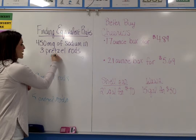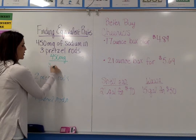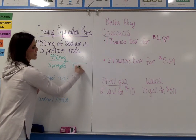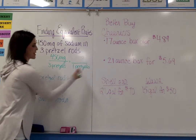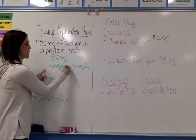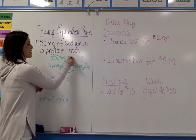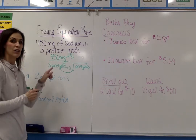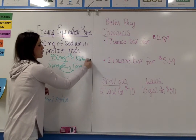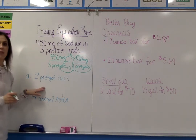We set up our unit rate as a ratio: 450 milligrams over three pretzels, because we need to find how many milligrams are in one pretzel. Make sure you're putting labels on your rates. Going from three to one means we're dividing by three. To keep them equivalent, if we divide the denominator by three, we also have to divide the numerator by three. 450 divided by three is 150, so the unit rate is 150 milligrams per one pretzel.